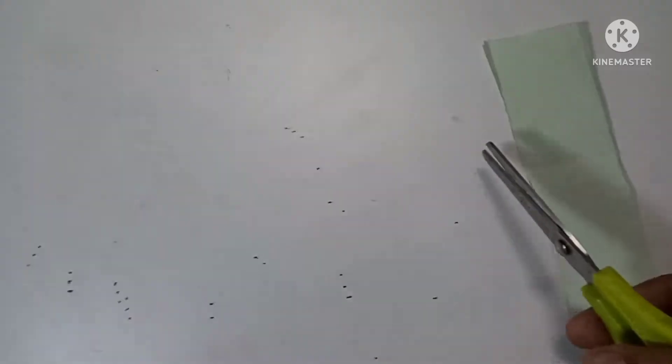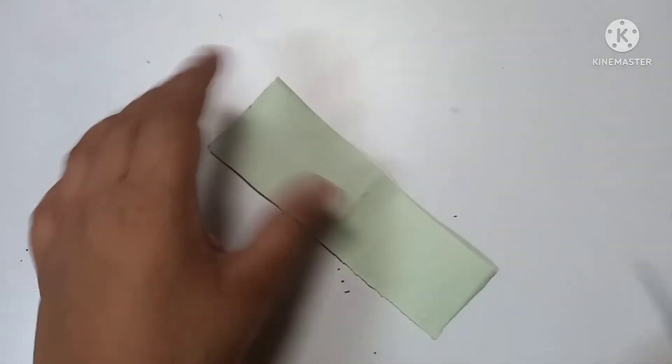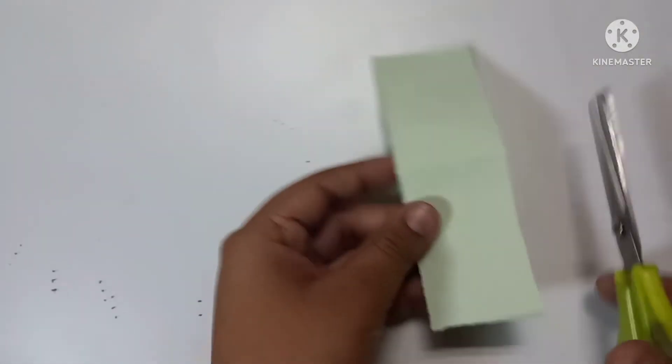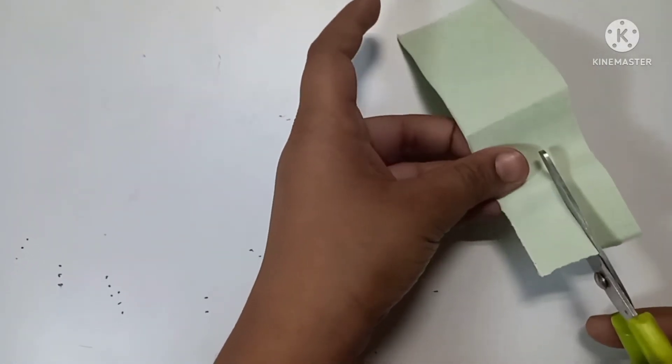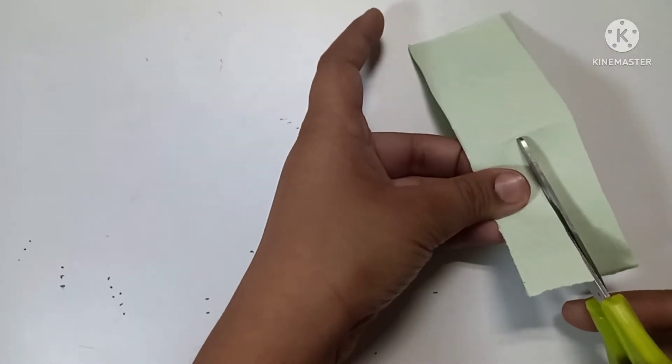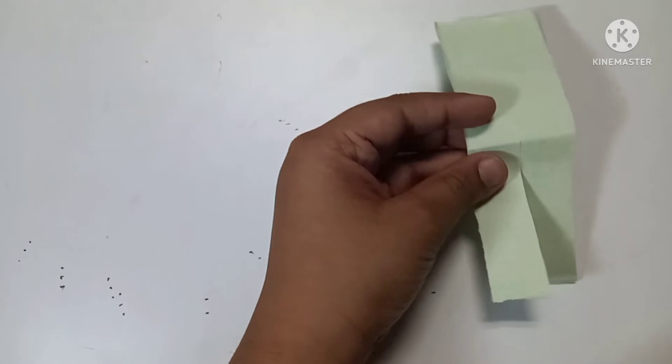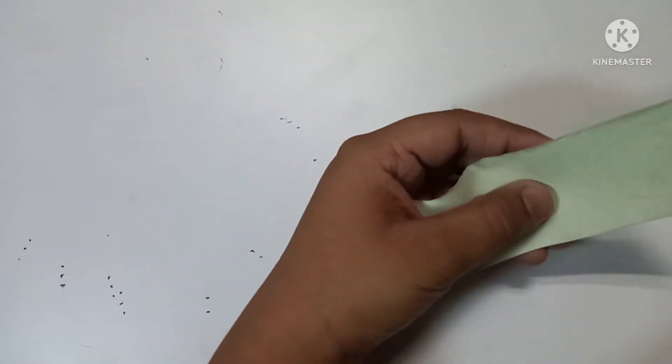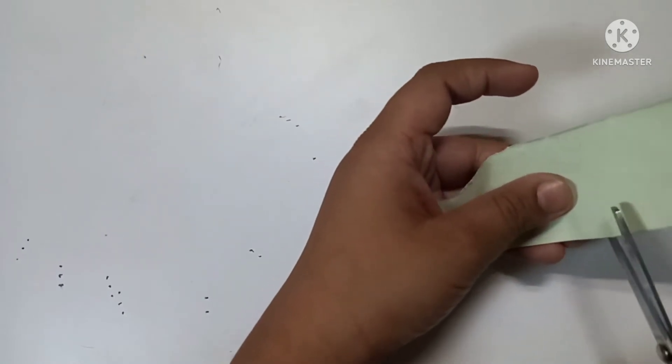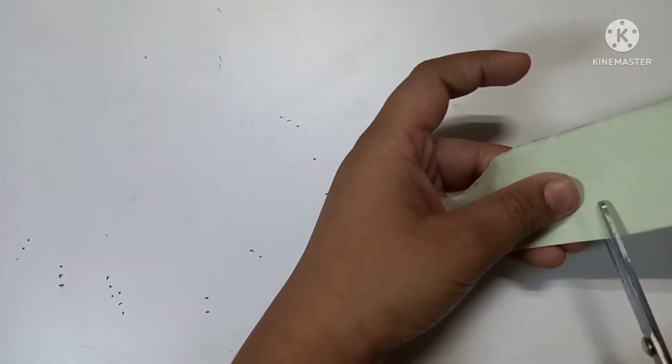You need to take this much paper, after that you need to cut it into two pieces. After doing this, you need to cut from the bottom of the center from here.